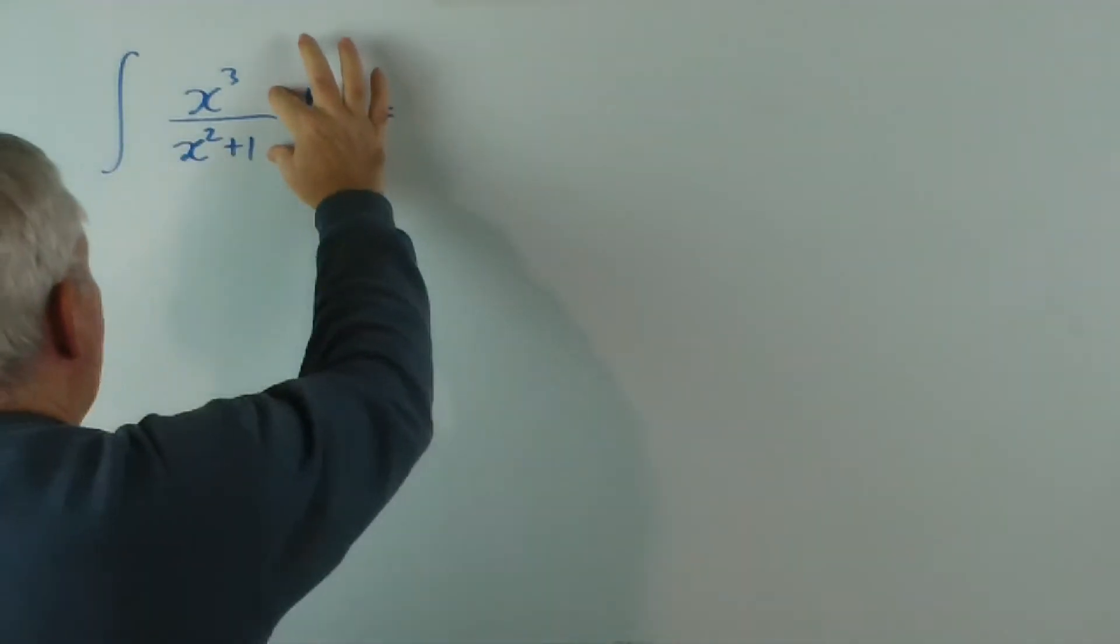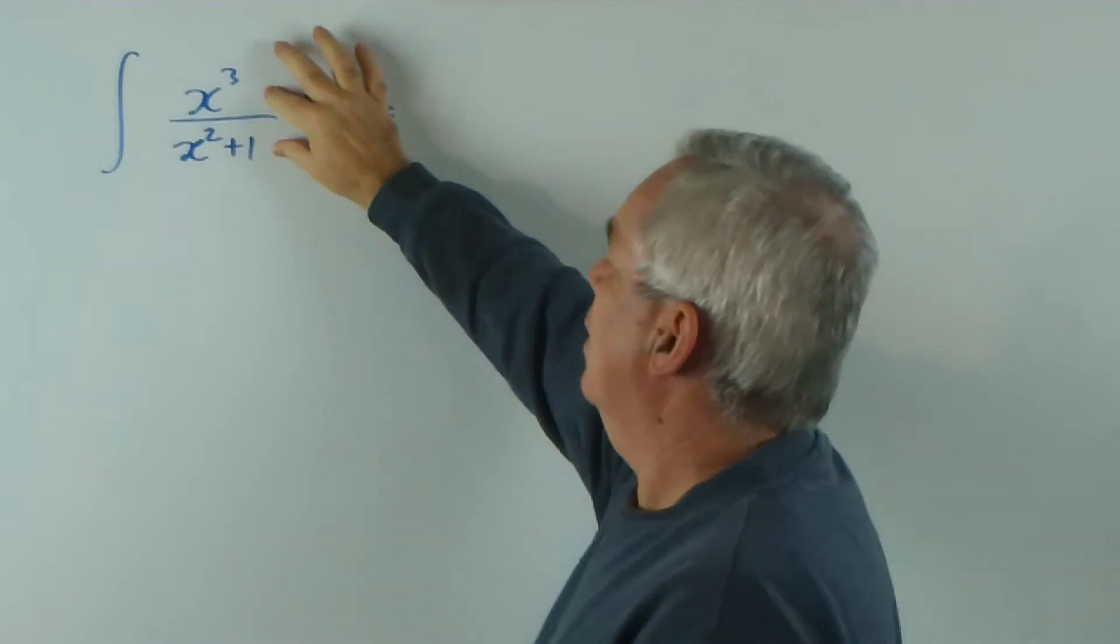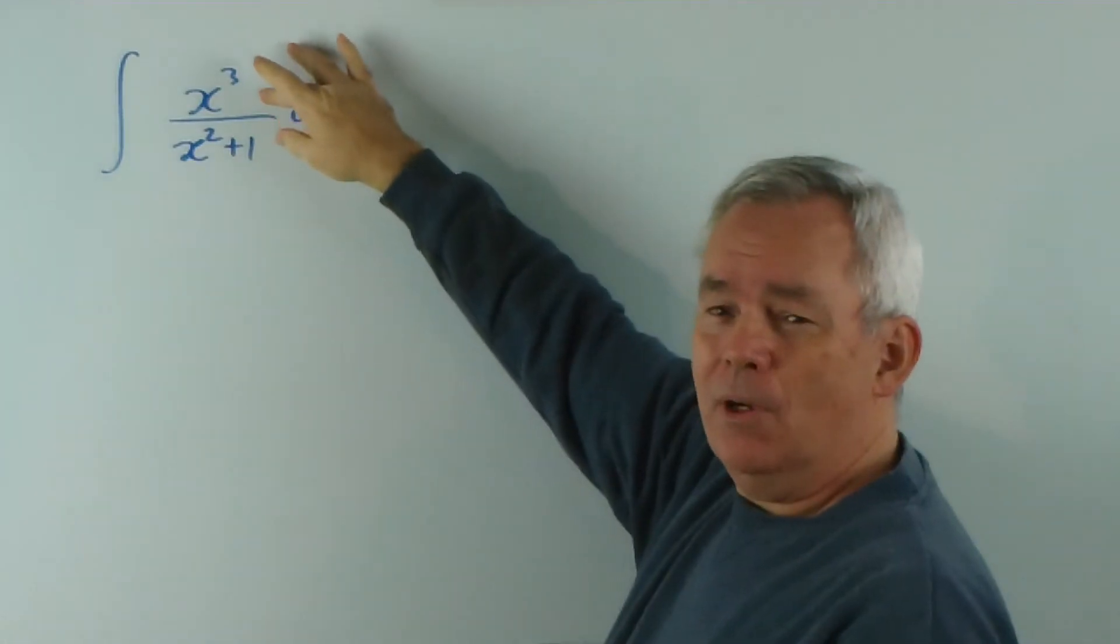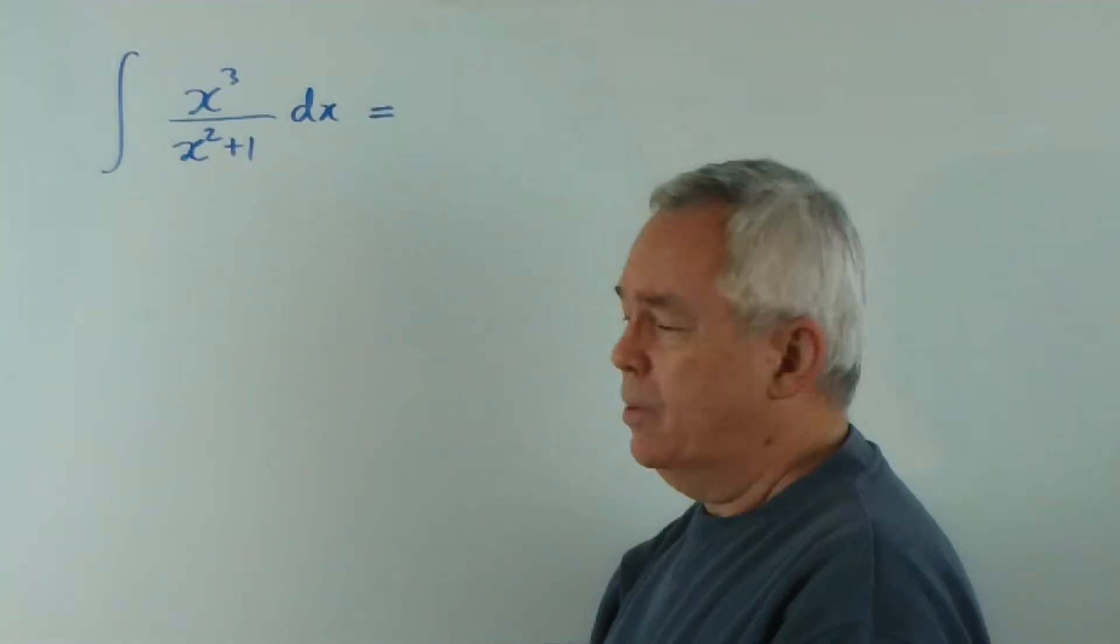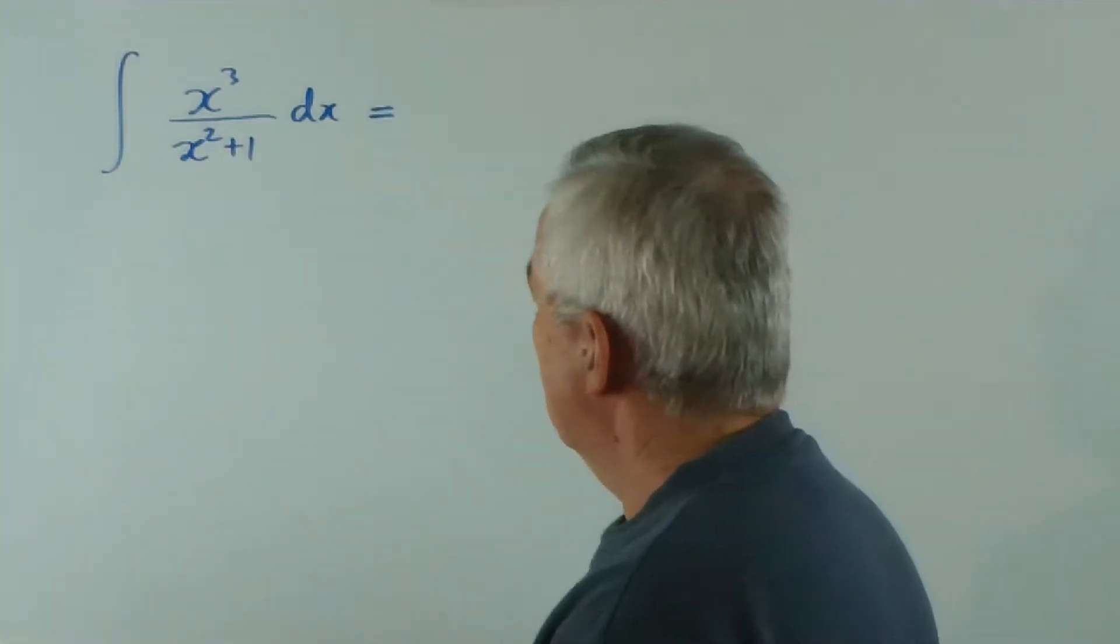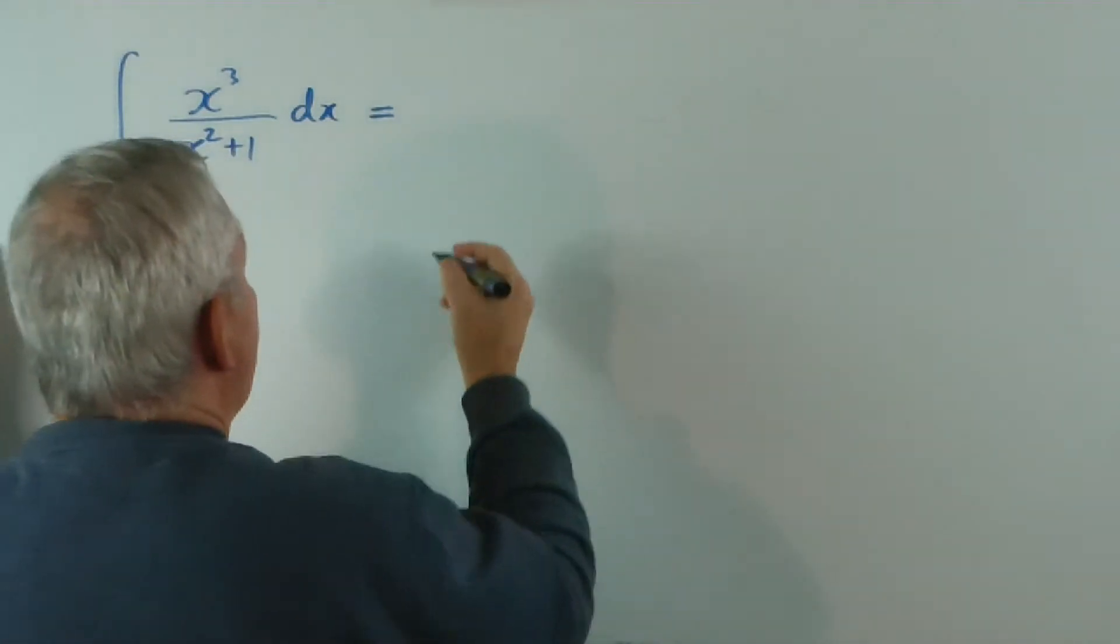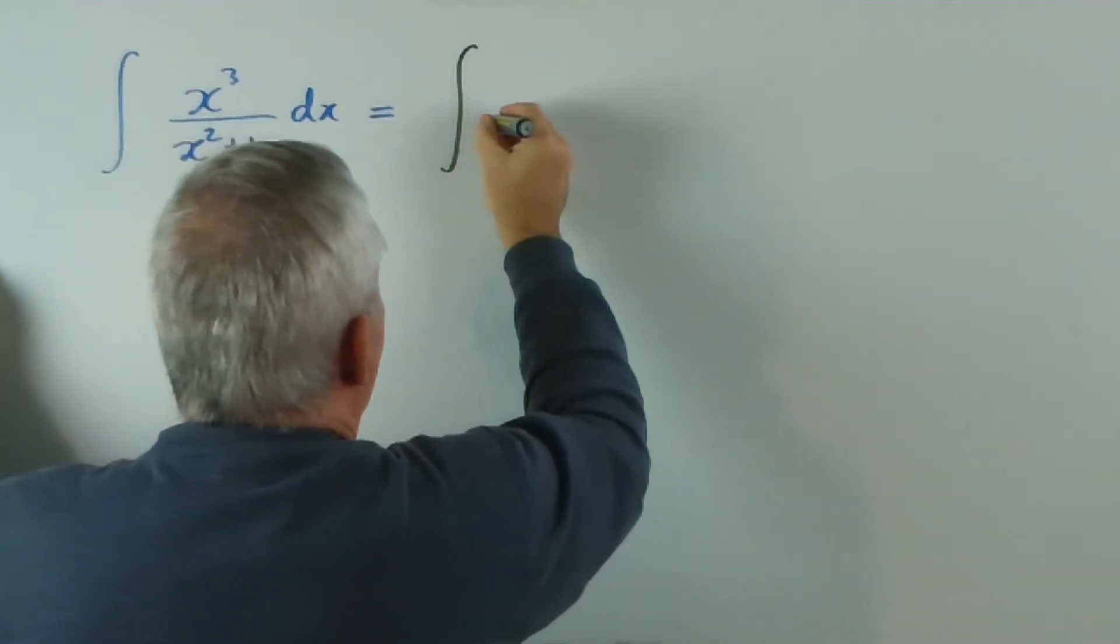You'll notice that we have two polynomials. The one on top this time being of higher order than the one below, which means naturally that we would divide them to start with. There is a fairly easy way of achieving this. Let me show you.